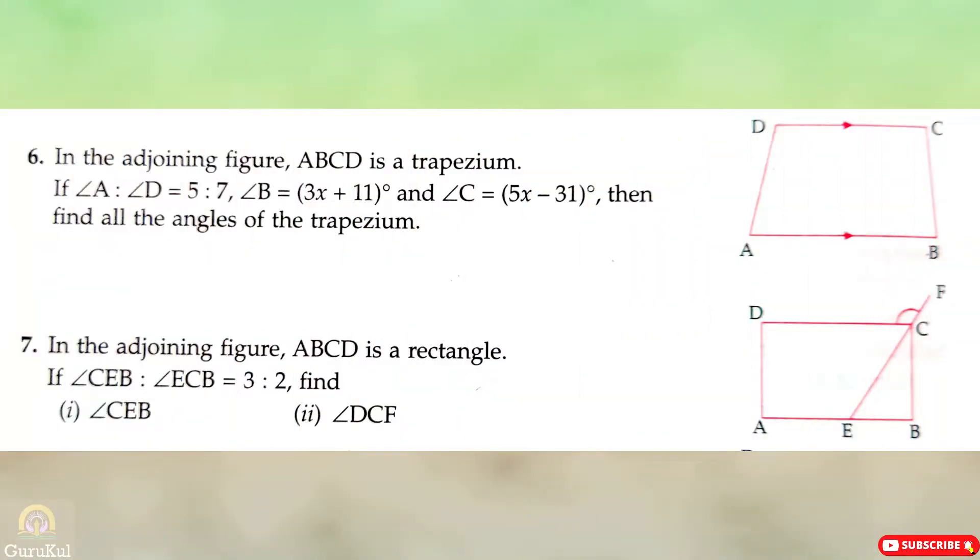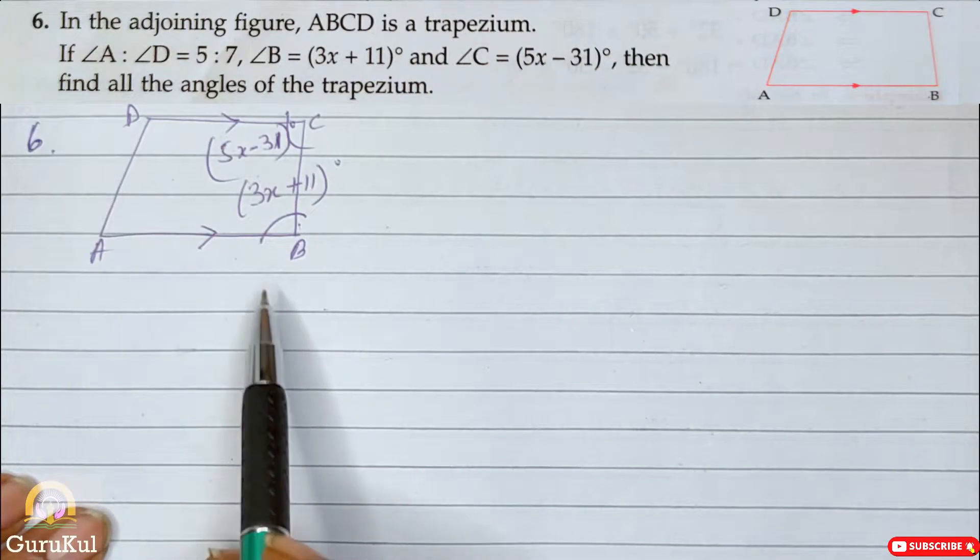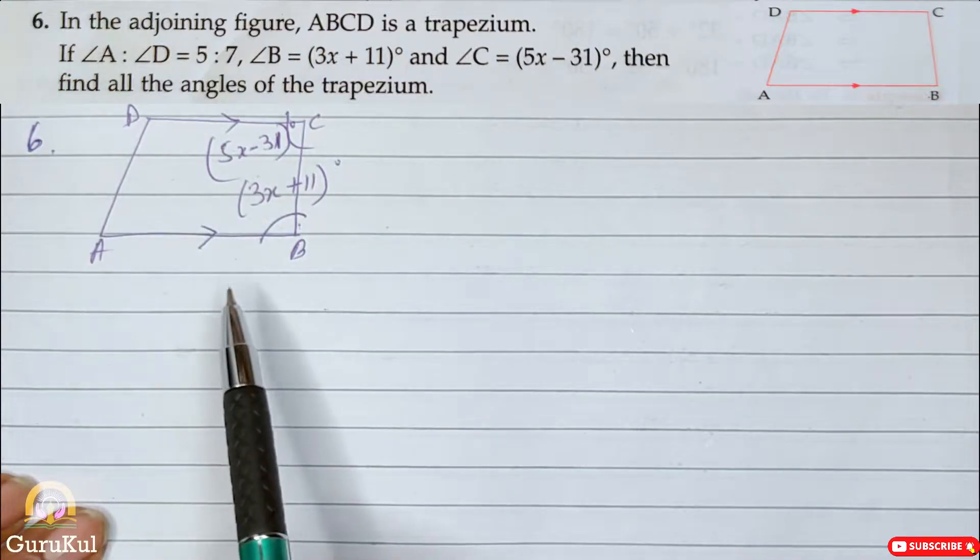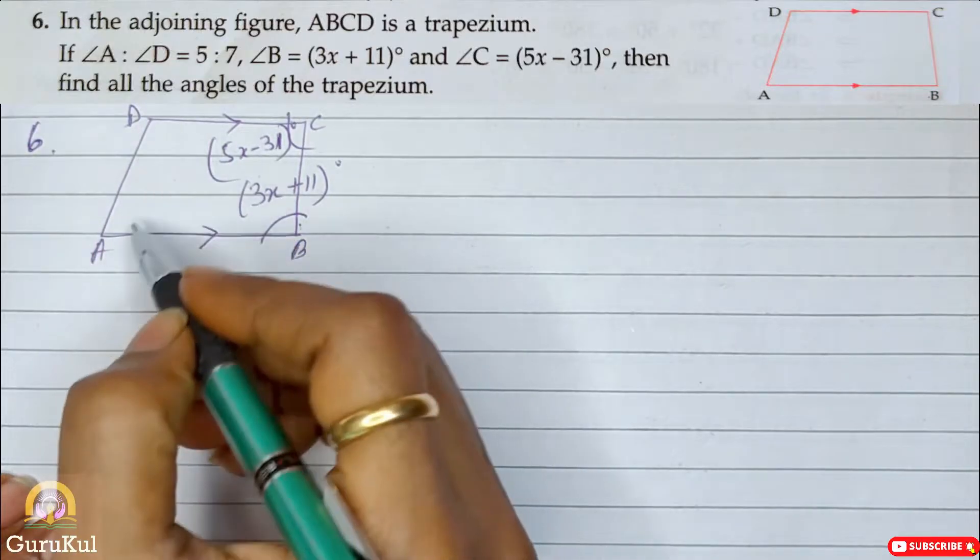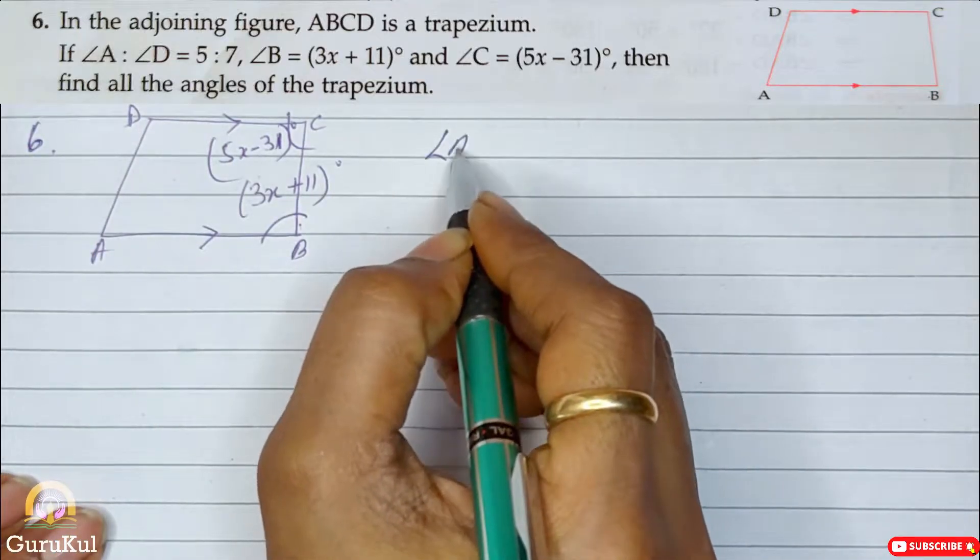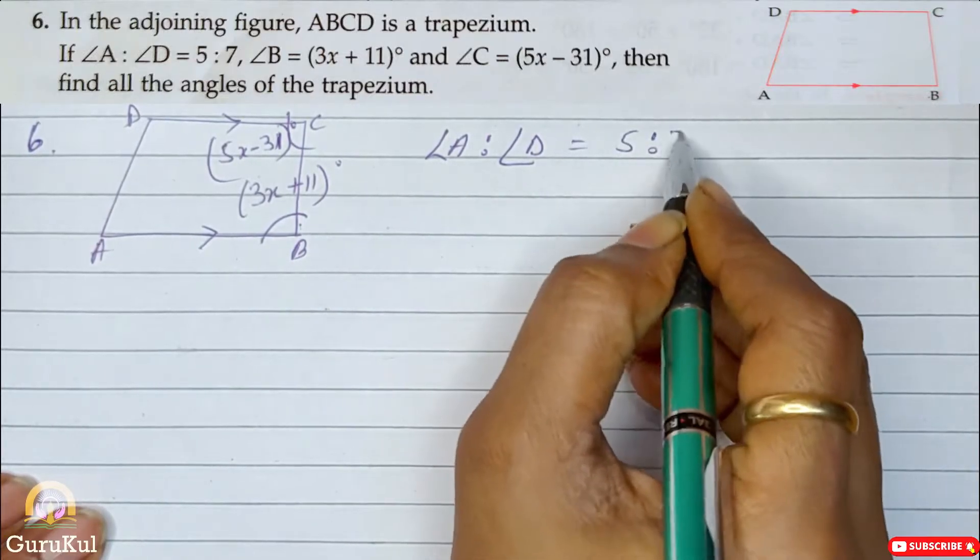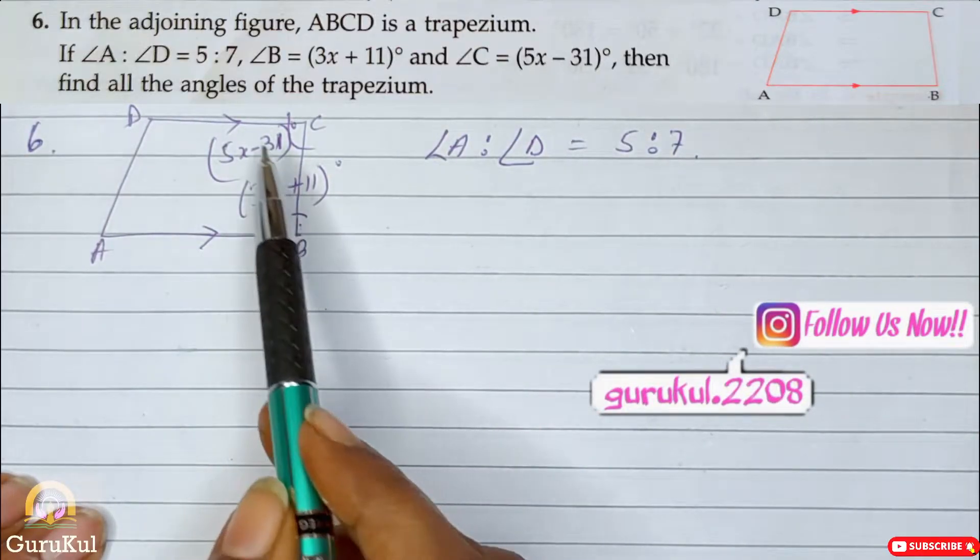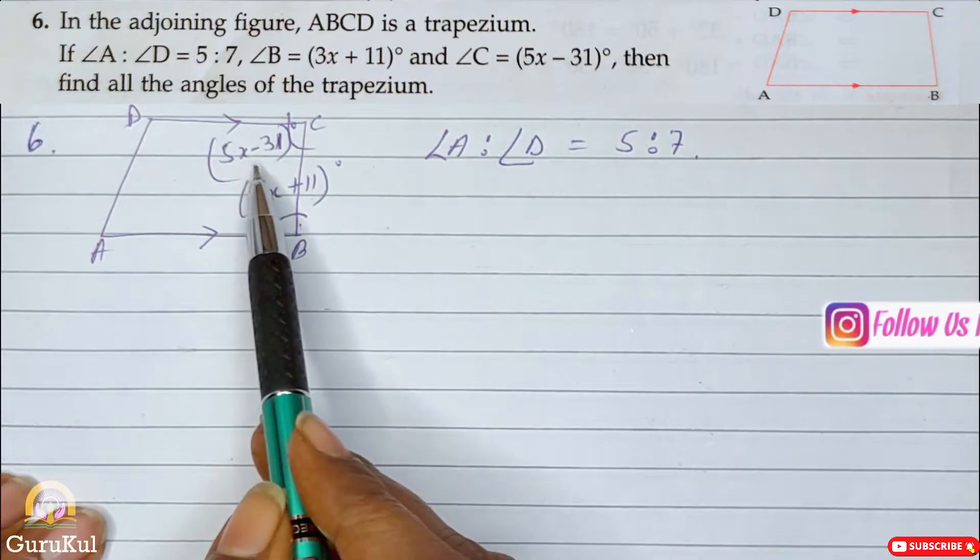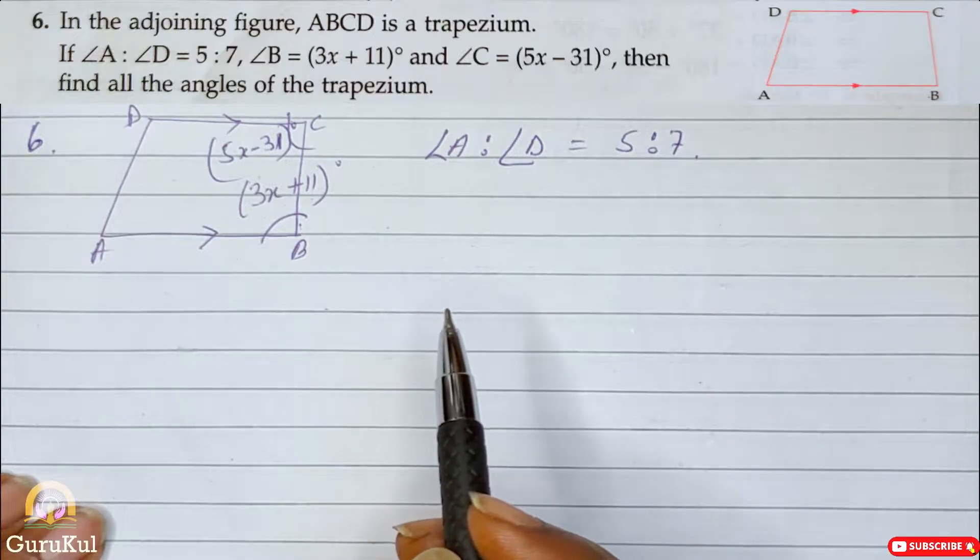Today I am going to start with part 3 of exercise 13.3. Now question number 6, as you can see on the screen. ABCD is a trapezium. If angle A to angle D is equal to 5 is to 7, angle B is 3x plus 11 and angle C is 5x minus 31, then we need to find the angles of the trapezium. So let's start.